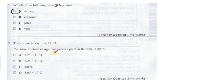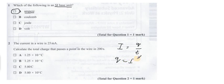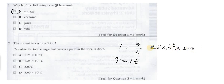Question number 2: the current in a wire is 25 milliampere. Calculate the total charge that passes a point in a wire in 200 seconds. If you know the definition, current is equal to charge over time, meaning Q equals I times T. Current is 25 milliampere, which is 10 to the power minus 3, times time of 200 seconds. Solving this gives a charge of 5 coulombs. So the option is C.